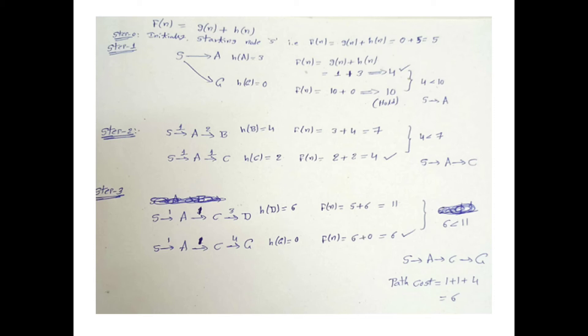In step 2, from node A there are two paths: A to B and A to C. For S→A→B: path cost is 1 + 2 = 3, heuristic value of B is 4, so f = 3 + 4 = 7. For S→A→C: path cost is 1 + 1 = 2, heuristic value of C is 2, so f = 2 + 2 = 4. The lower value is 4, so we finalize the path S→A→C.